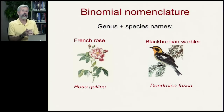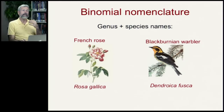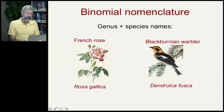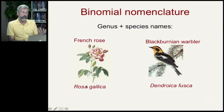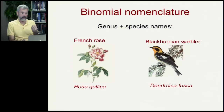Linnaeus had that hierarchical system going from species all the way up to kingdom. His other great contribution that we still use today is what's called Binomial Nomenclature — every species on Earth is given a two-word name consisting of their genus name and the species name. For example, the French Rose's binomial is Rosa gallica. This bird, the Blackburnian Warbler, has genus name Dendroica and species name fusca, so we would say it is Dendroica fusca.